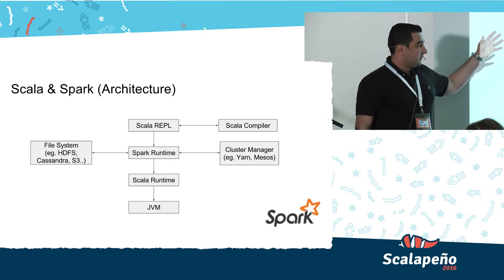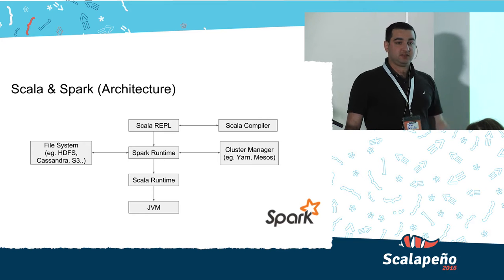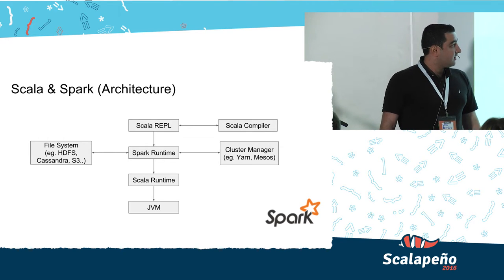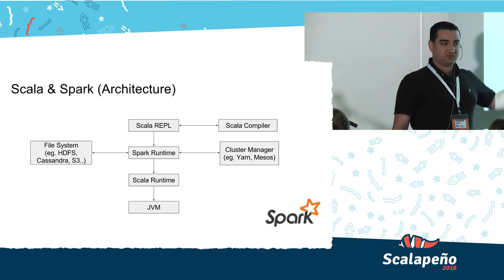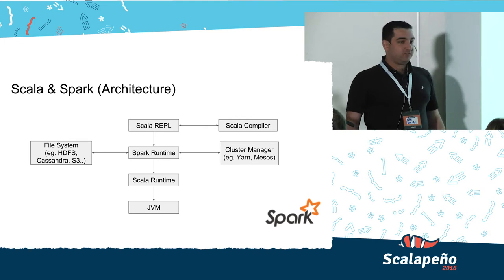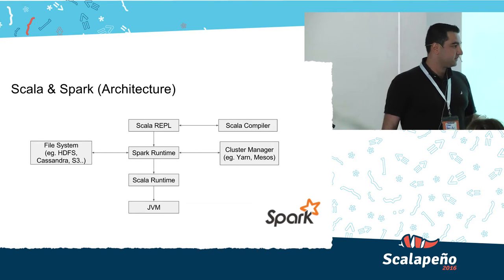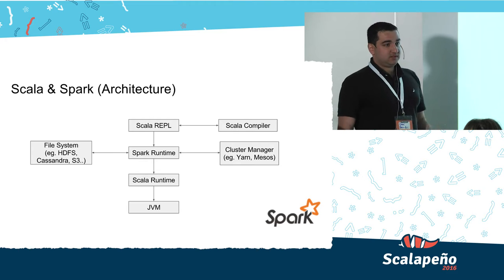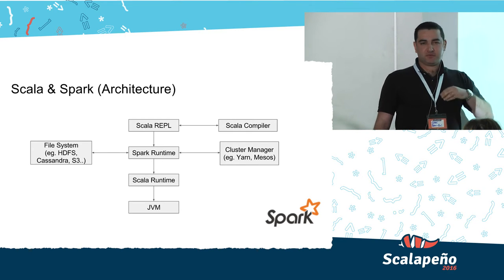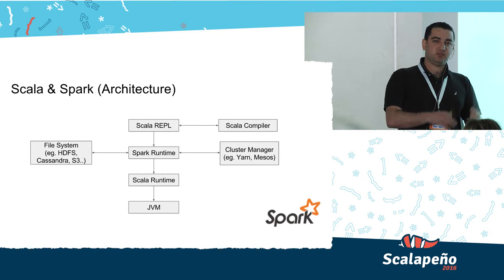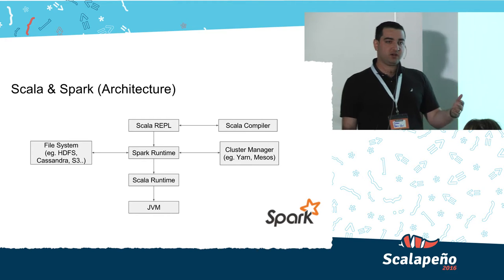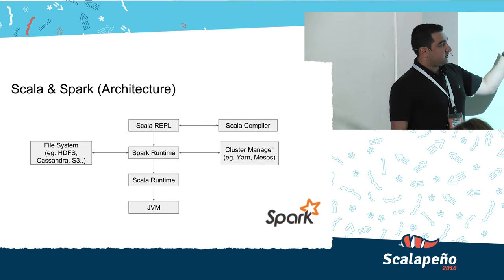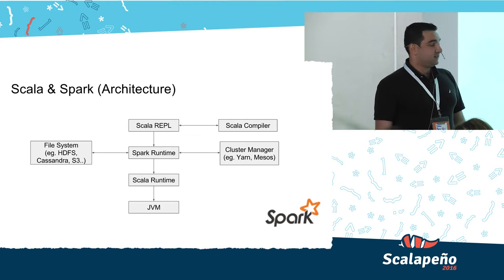Over the storage layer, we have the actual Spark runtime, which gives us the fully distributed API over something called RDDs — resilient distributed datasets. The Spark runtime relies on the Scala runtime, which relies on the JVM. Eventually we have lots of JVMs running in our distributed system communicating with each other over Akka. Over the Spark runtime, we have the Spark REPL — forked from the Scala REPL — which we can use for interactive mode, online querying, and running Spark code without writing a full-fledged application. The Spark REPL uses the Scala compiler to get types and run code.